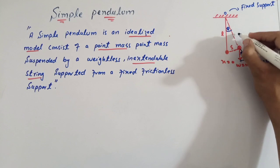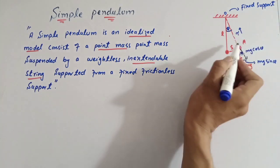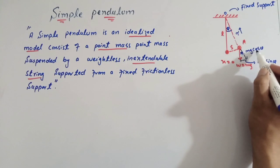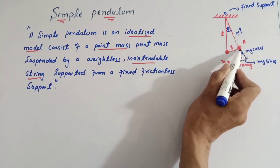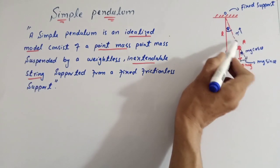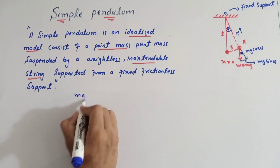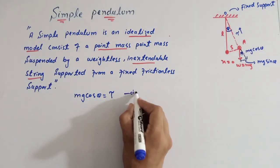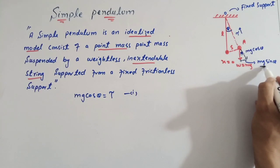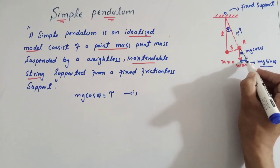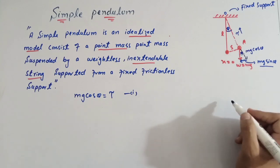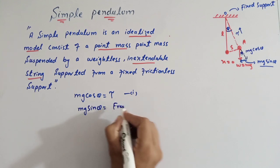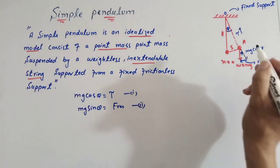Tension in string کی direction upper کی طرف ہے اور mg cosθ اسی direction میں ہے، تو mg cosθ balance کرتا ہے tension in string — یہ equation number 1۔ اسی طرح mg sinθ جس کی direction mean position کی طرف ہے، وہ act as a restoring force — یہ equation number 2۔